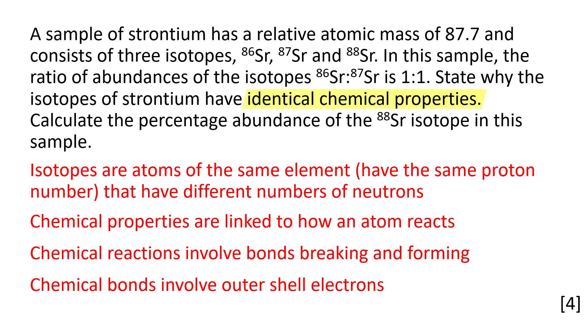Let's look at the chemical properties first of all. Isotopes are atoms of the same element, they have the same proton number but have different numbers of neutrons. This is a definition that you could be asked for in exams and you should try to memorize it.